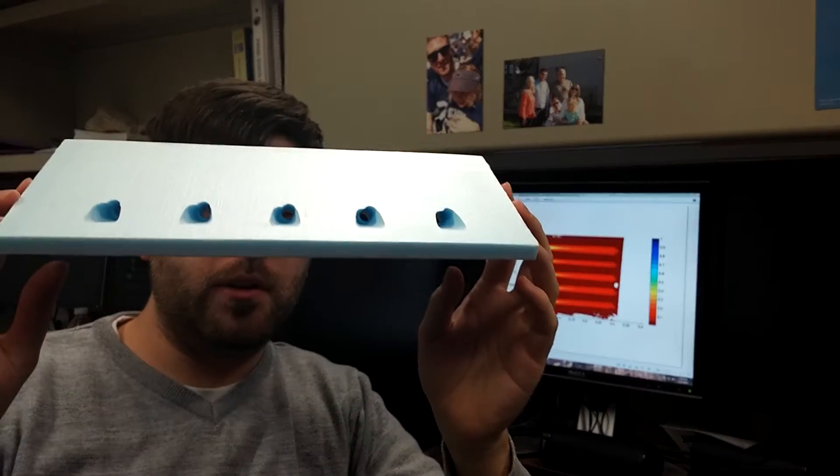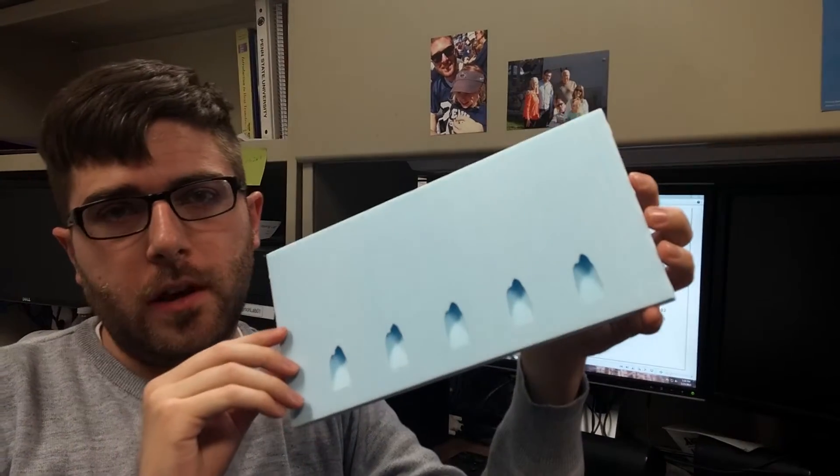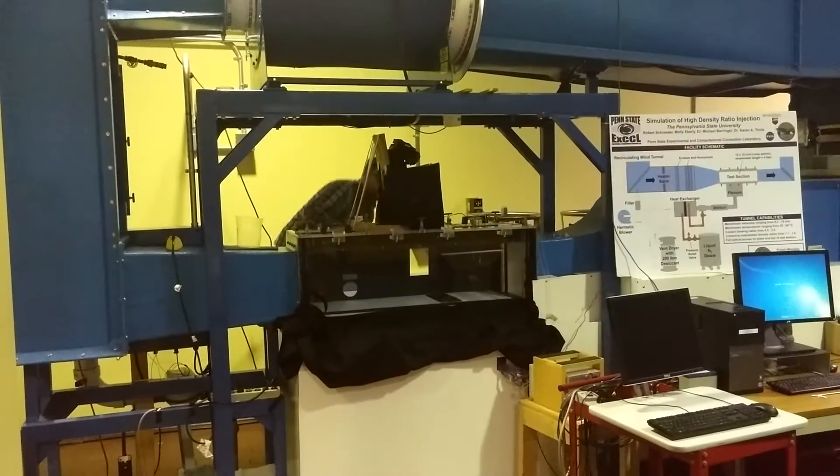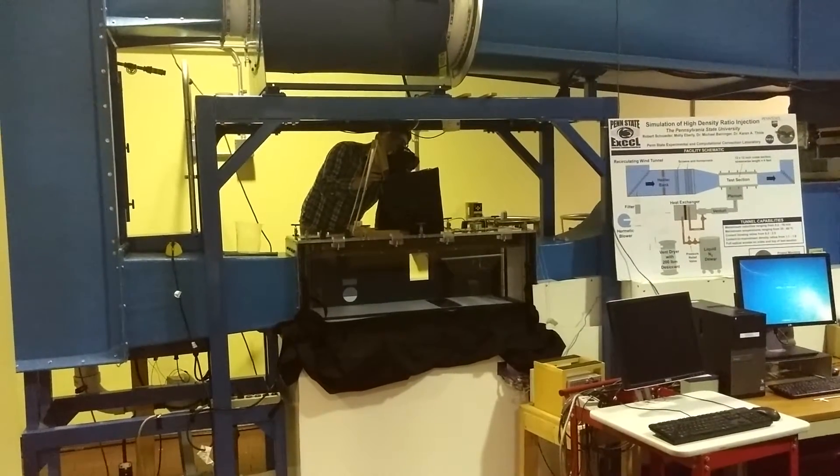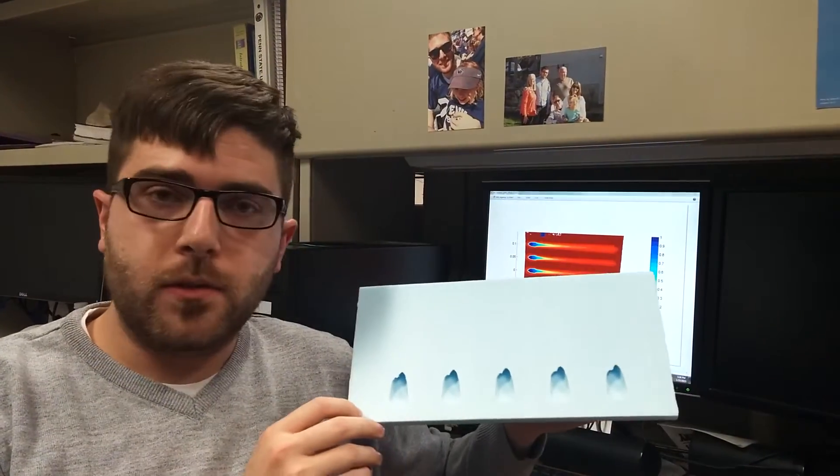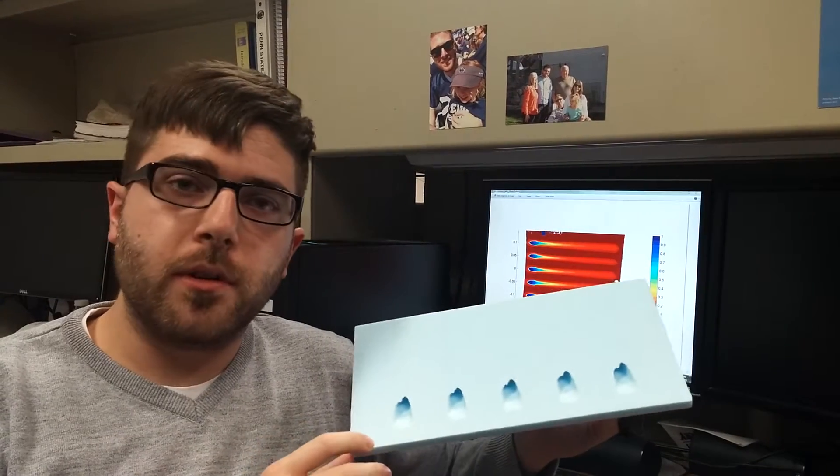My research in the Excel lab is on film cooling. Film cooling holes have a cylindrical metering section with a larger diffuser at the end. In our rig, we can test multiple complicated geometries of these film cooling holes and various parameters of the diffuser in order to get better film cooling effectiveness.